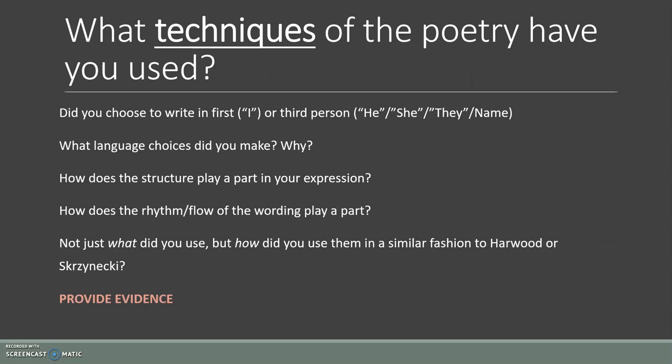What techniques of the poetry or the original text have you used? Some things you could include: did you choose to write in first person, third person, or even second person, and why? You need to think about what language choices you made — think about the nouns, verbs, adjectives, adverbs that you used. Think about figurative language such as similes, metaphors, personification, and other techniques like juxtaposition and poetic techniques like enjambment. We don't want you to just give examples of where you've used those, but also explain why you have in particular situations and contexts.